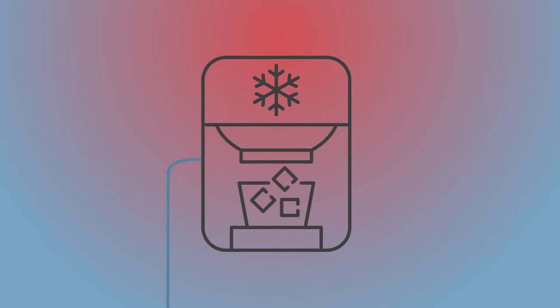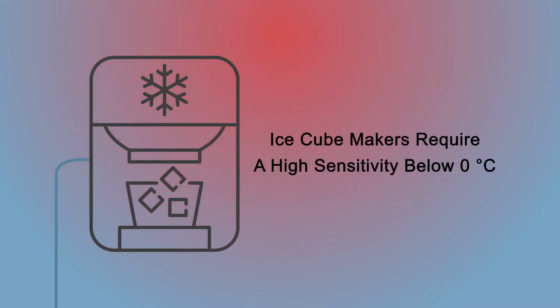An application with an ice cube maker would likely leverage the dark blue curve since any small change in temperature below the zero degrees Celsius range yields a massive change in resistance.